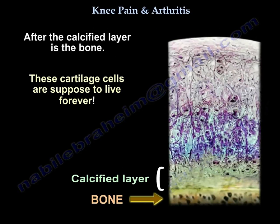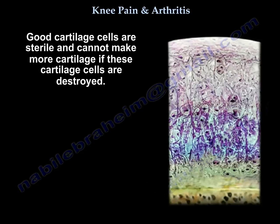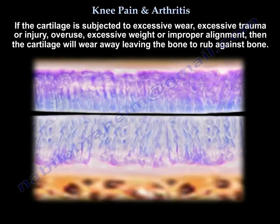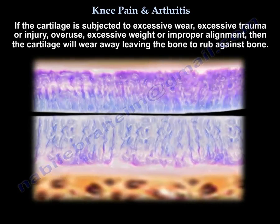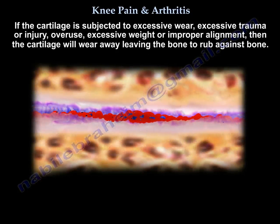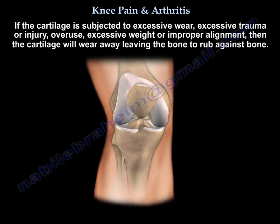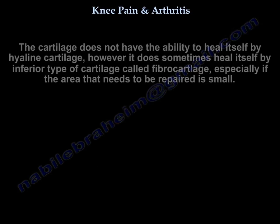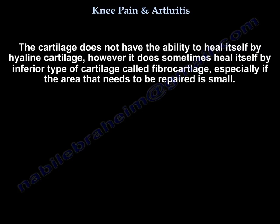These cartilage cells live forever. Good cartilage cells are sterile — they cannot make more cartilage if they are destroyed. If the cartilage is subjected to excessive wear, excessive trauma or injury, overuse, excessive weight, or improper alignment, the cartilage will wear away, leaving bone to rub against bone. The cartilage does not have the ability to heal itself by hyaline cartilage, but it can sometimes heal by an inferior type called fibrocartilage, especially if the area that needs to be repaired is small.